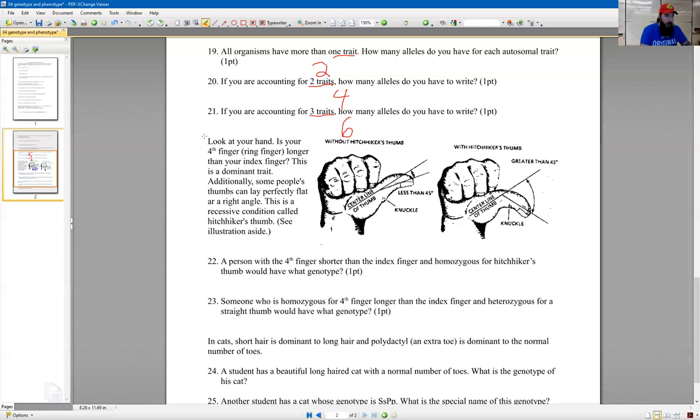So here, right on the screen, these are two common traits. You can actually look at yourself on your own hand. You're looking at your hand, and if your ring finger, like mine, your ring finger is longer than your index finger. See how mine is? The ring finger is longer than the index finger. If that's the case, then you have a dominant trait. So I've got the dominant version of this trait.